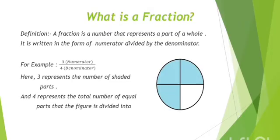For example, 3 upon 4. 3 is numerator and 4 is denominator. Here, 3 represents the number of shaded parts and 4 represents the total number of equal parts the figure is divided into.